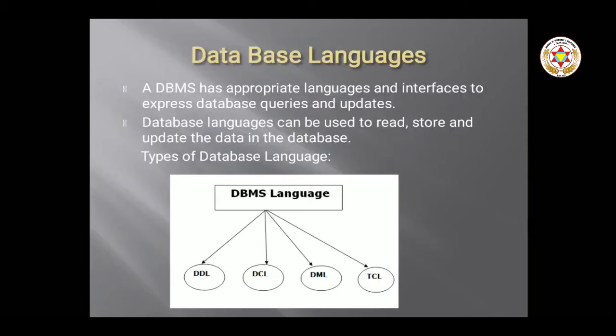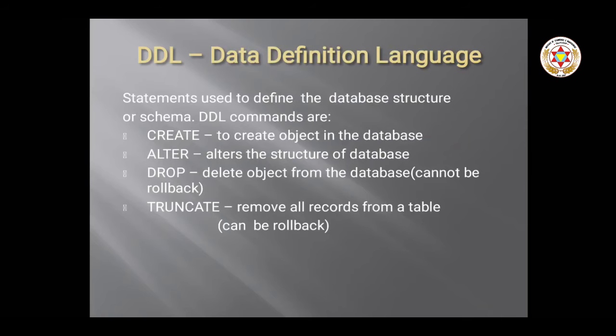We have four types of database languages: DDL, DML, DCL, and TCL. DDL stands for Data Definition Language. It is used to define the database structure — the schema of the database, the overall view of how the database will be stored.